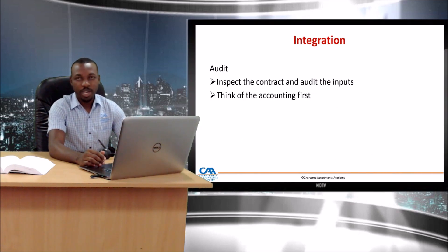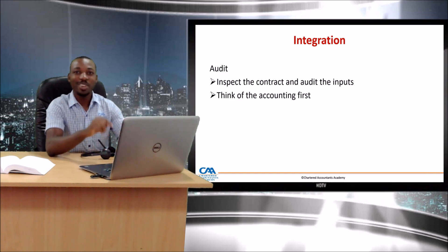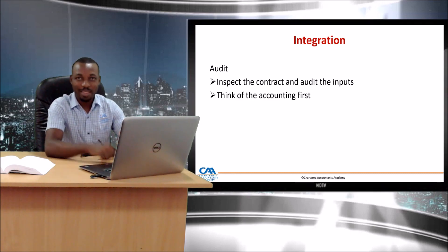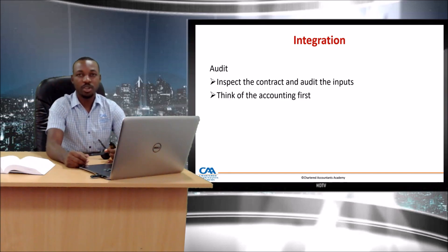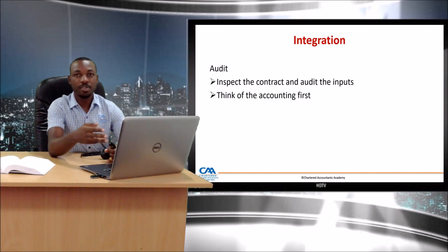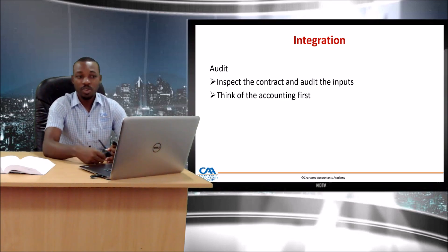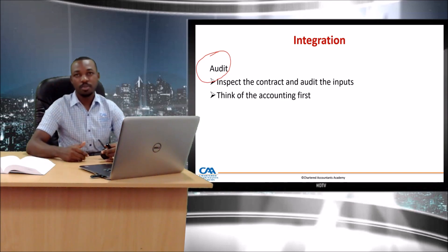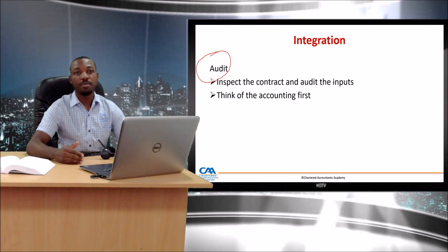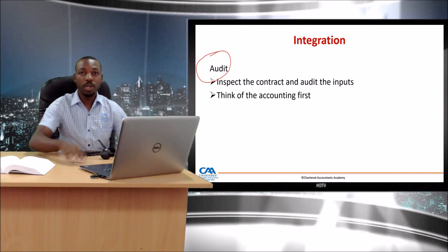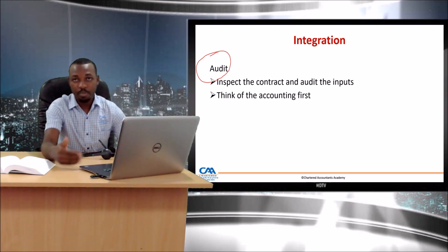Let's talk about how IFRS 16 integrates with other topics and disciplines — that is critical and key. Starting with tax: we've already discussed VAT aspects, and a question could ask you to discuss or calculate the VAT implications related to a lease transaction — this came up in June 2018. A question can also come from an audit perspective: audit the lease transaction and financial reporting aspects, for example auditing what the finance director reported on the lease.